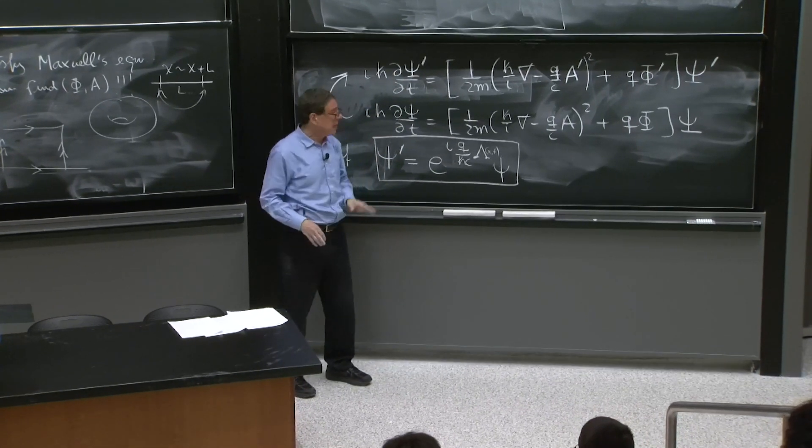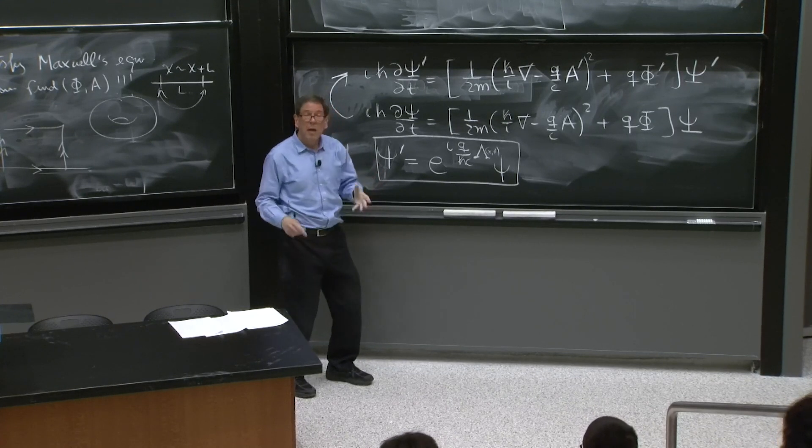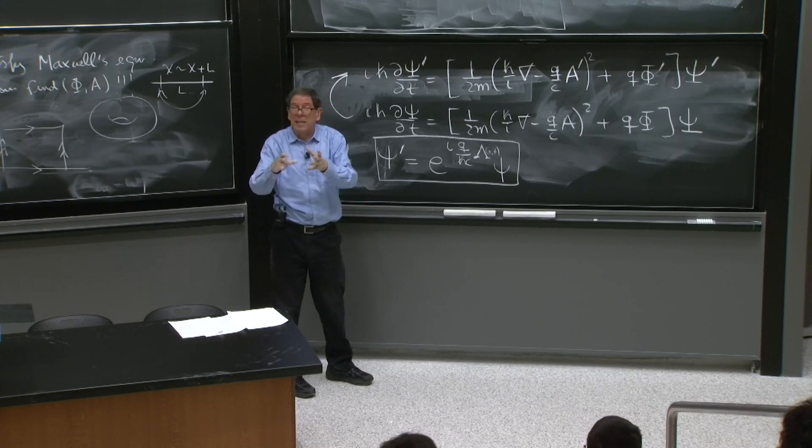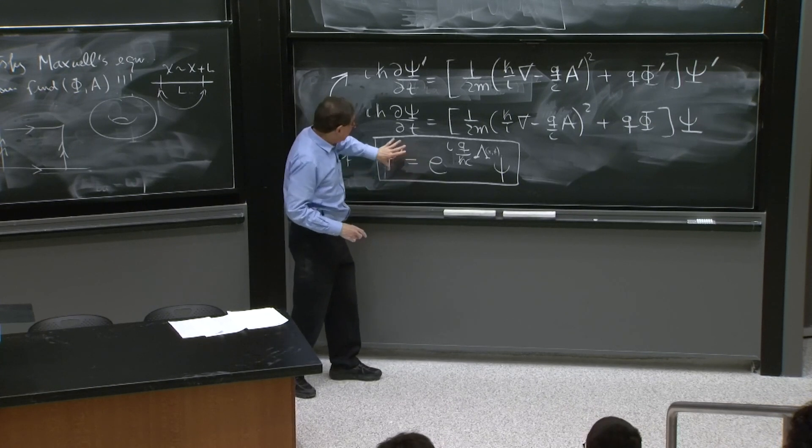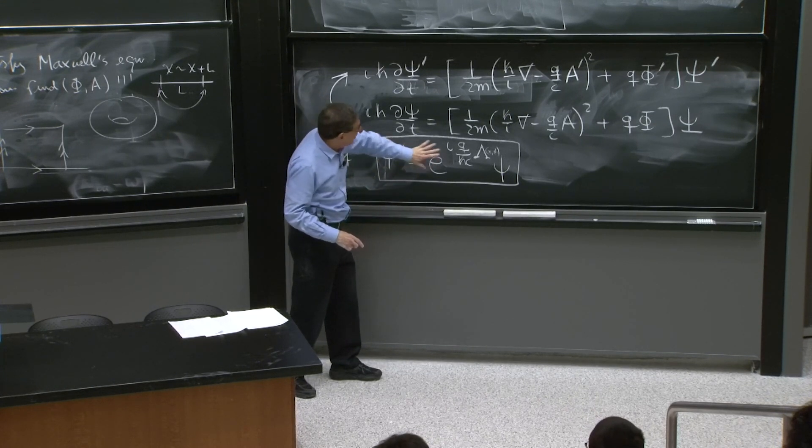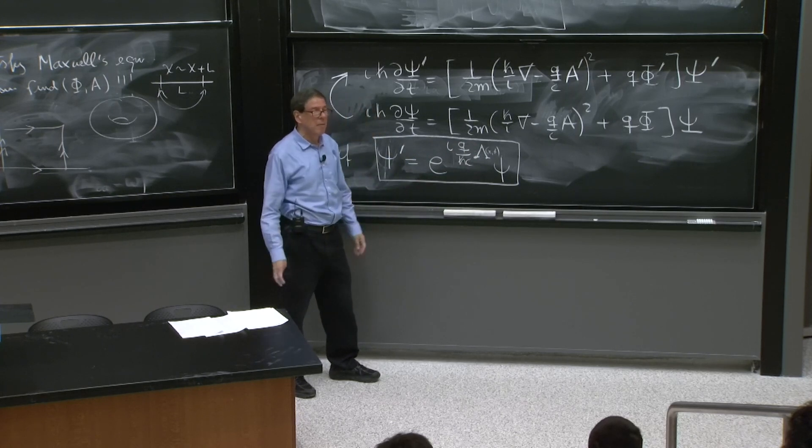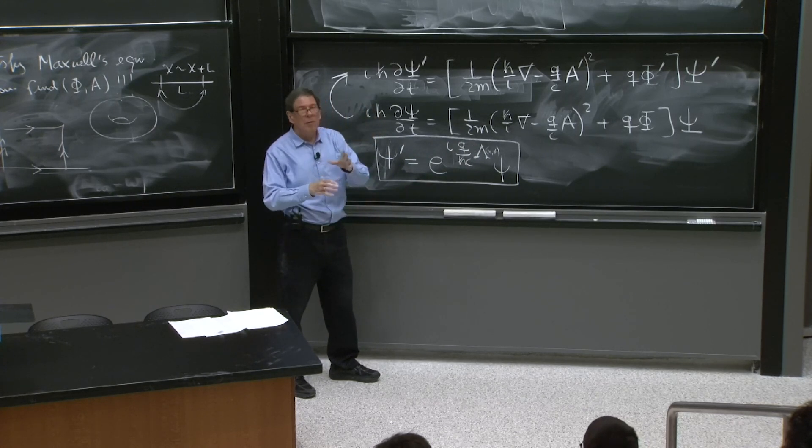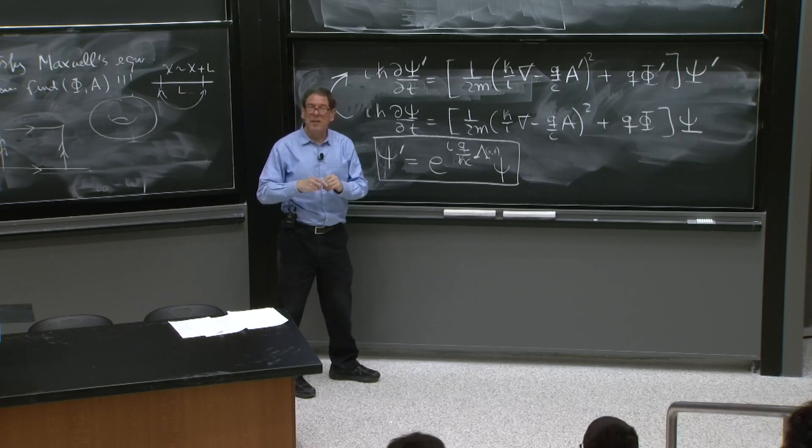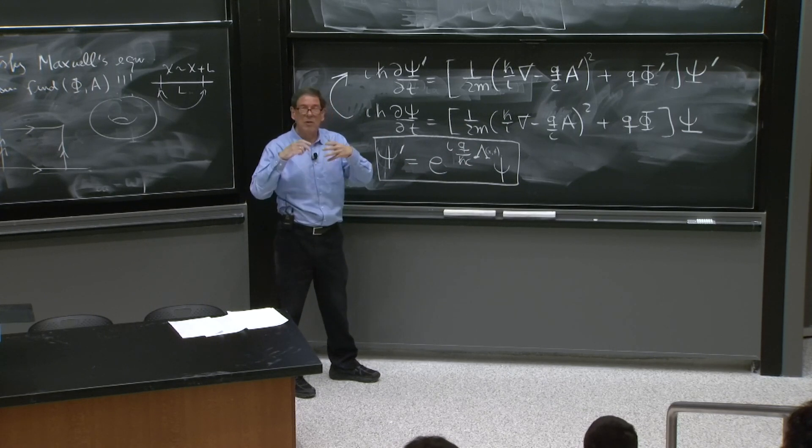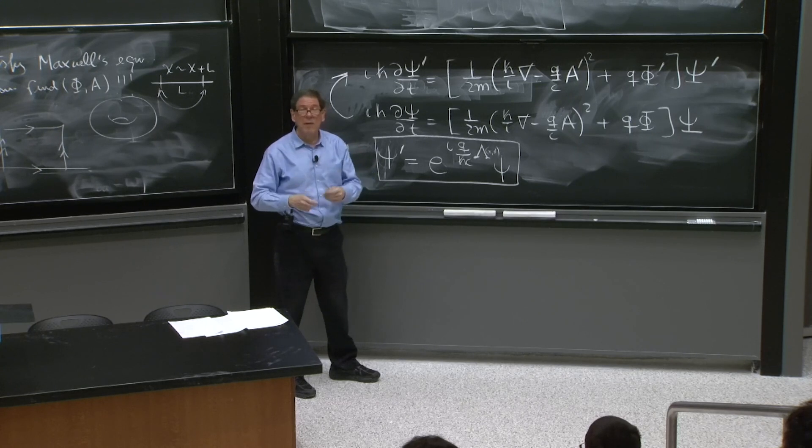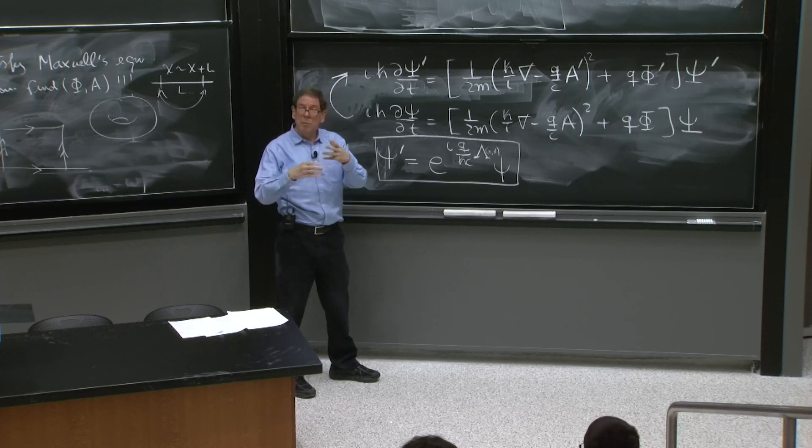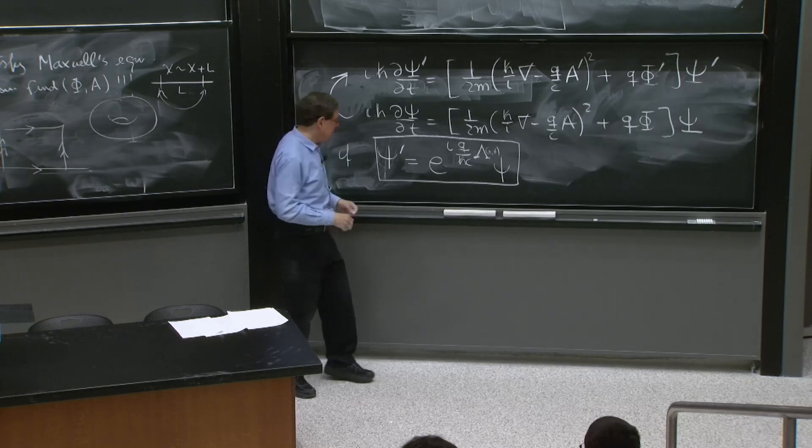And then we will have to check that the physics is the same. If you wanted to compute the expectation value of x on this wave function, this phase factor would cancel. So it would give you the same. If you want to compute some other expectation values, this is a little funny. So there will be operators that are nice for wave functions. They're called gauge invariant operators. And it will be a nice story that we will develop next time.